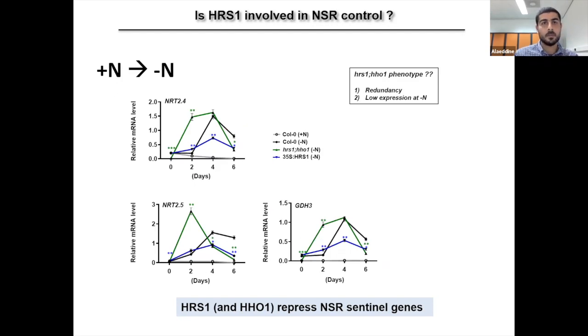And this is also true for two other nitrogen starvation markers, such as NRT2-5, which is another high affinity nitrate transporter, and also GDH3, which is involved in N recycling. In another experiment, we also see in black the upregulation of the nitrogen starvation marker in minus N. In gray in plus N is not induced, and the attenuated response in the overexpressor HHO1.